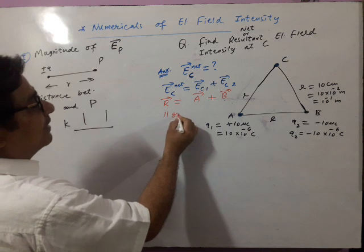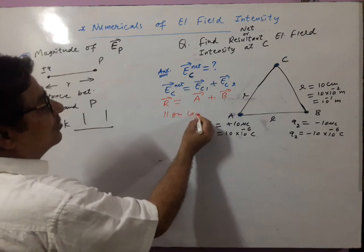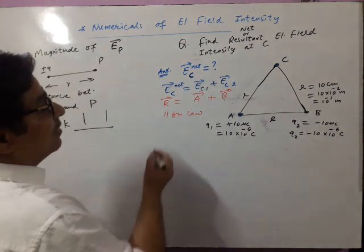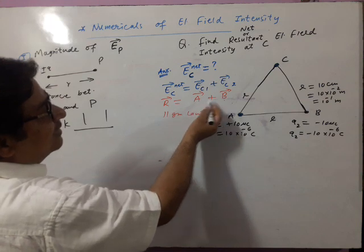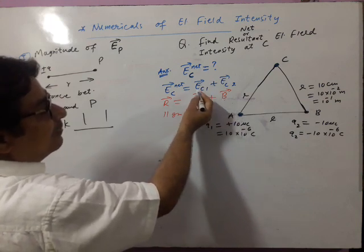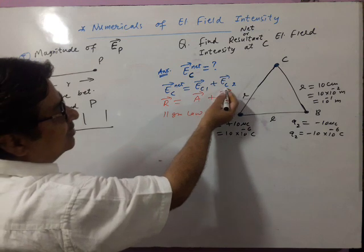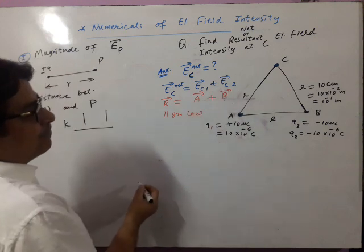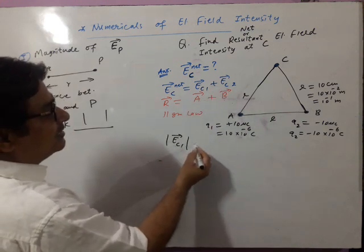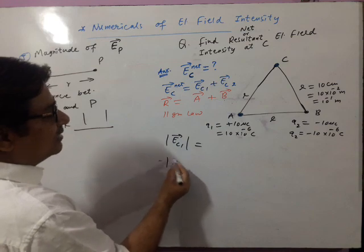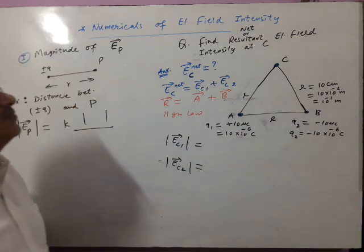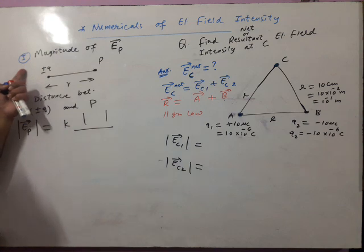From parallelogram law, you will have to find magnitudes of A vector and B vector — that is, magnitude of EC1 vector and EC2 vector. To find magnitude of EC1 and EC2, we begin with concept number 1.